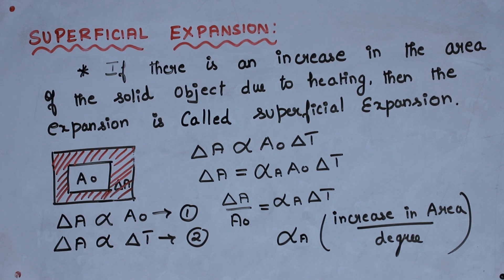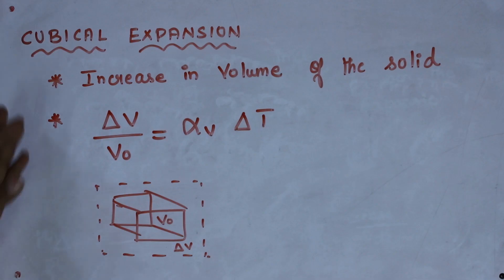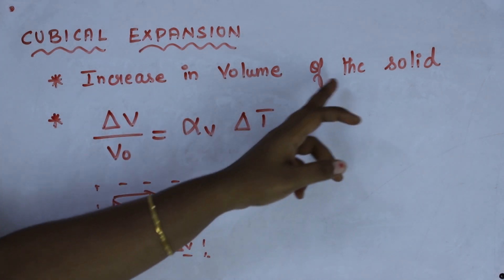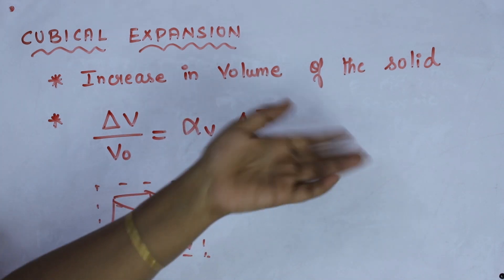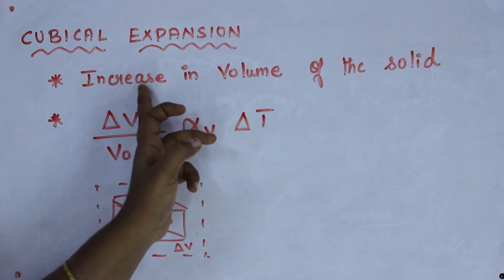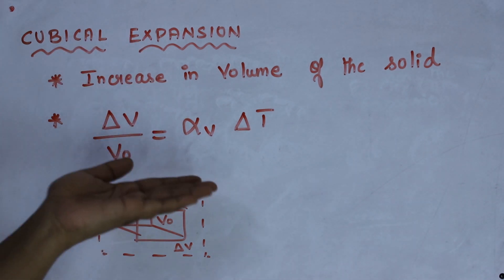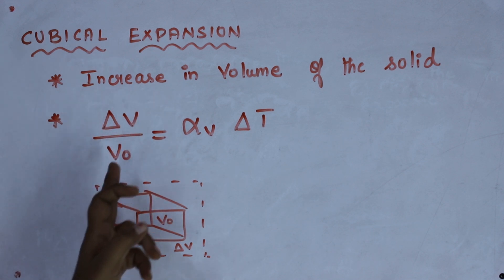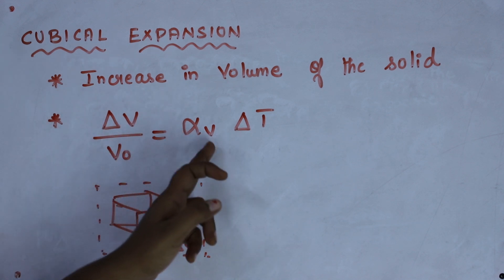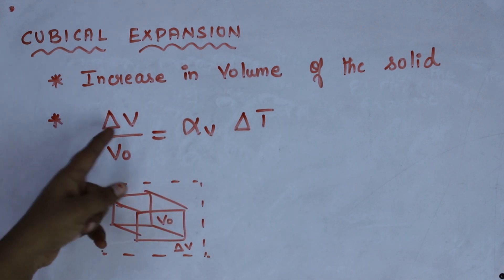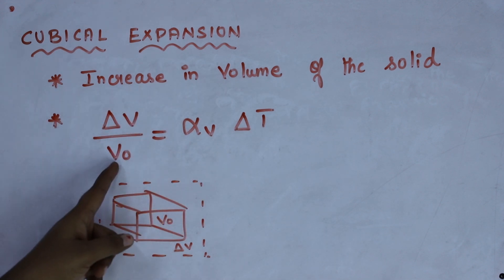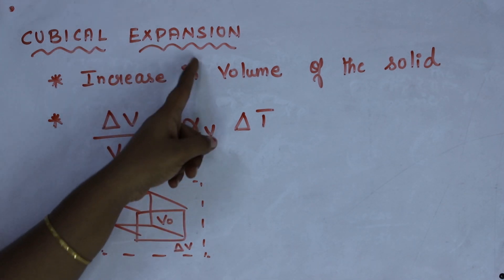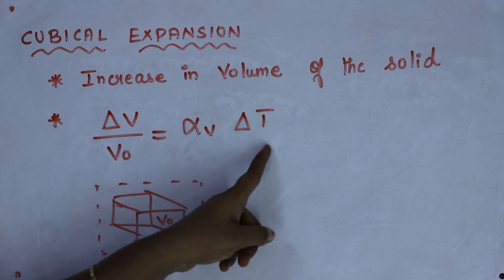We are going to see cubical expansion. The last expansion is cubical expansion. If the volume of the solid increases because of the rise in temperature, then it is said to be cubical expansion. The formula for cubical expansion is delta V divided by V₀ equals alpha V times delta T, where delta V is the change in volume, V₀ is the original volume, alpha V is the coefficient of cubical expansion, and delta T is the change in temperature.